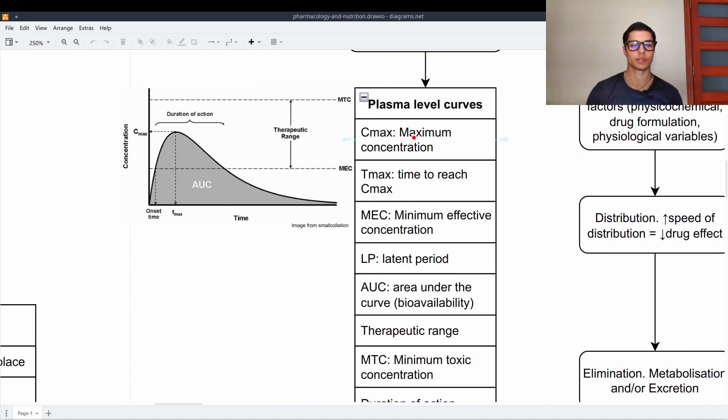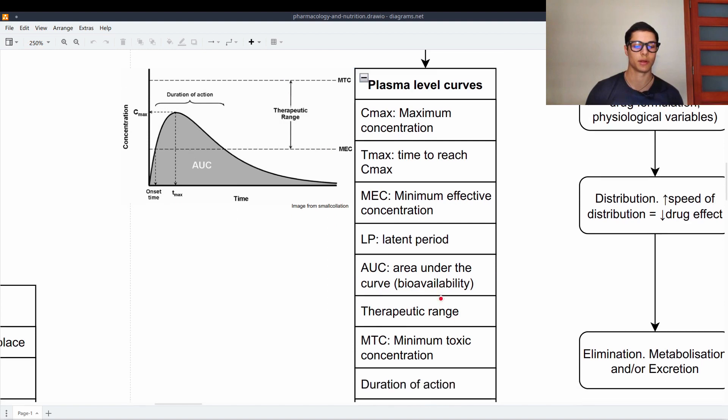This is a graphic of an administered drug. We have the Cmax, which is the maximum concentration. Tmax is the time to reach the Cmax. The MEC is the minimum effective concentration. If it doesn't go up this point, the drug is not effective. The latent period is the time it needs to reach the minimum effective concentration. Then the AUC is the area under the curve, which stands for the bioavailability of the drug. The therapeutic range goes from the minimum effective concentration to the minimum toxic concentration. After that you get toxic effects.